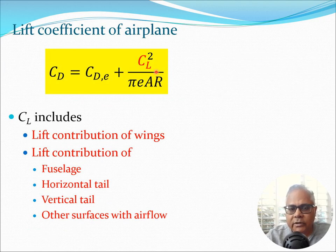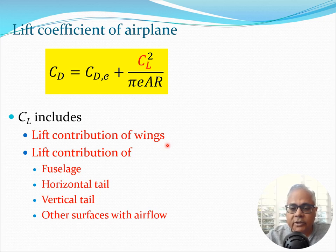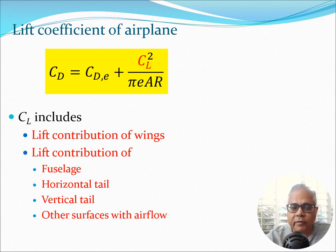Looking at the CL-based term: the lift coefficient of the airplane includes the lift coefficients of the wing as in the finite wing case, but also lift contributions from the fuselage, the horizontal tail, the vertical tail, and any other surfaces on the aircraft which involve airflow and contribute to lift. All these components need to be factored in.